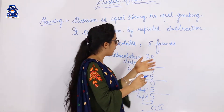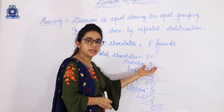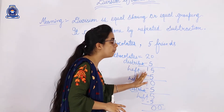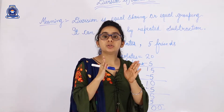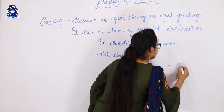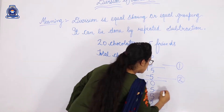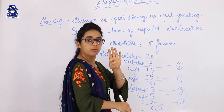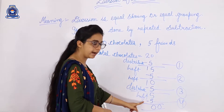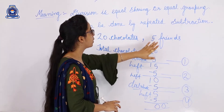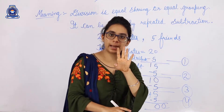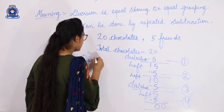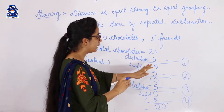So we used the repeated subtraction method — subtracting again and again, distributing one chocolate at a time to all 5 friends. Now let's find the quotient. How many times did we subtract? One, two, three, four times. So we distributed 20 chocolates to 5 friends by subtracting 4 times. The quotient here is 4.